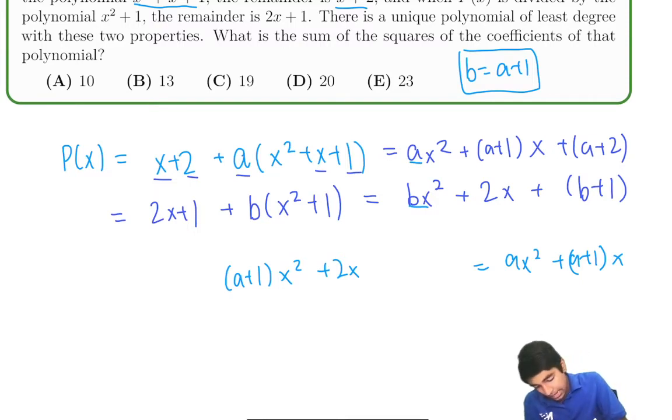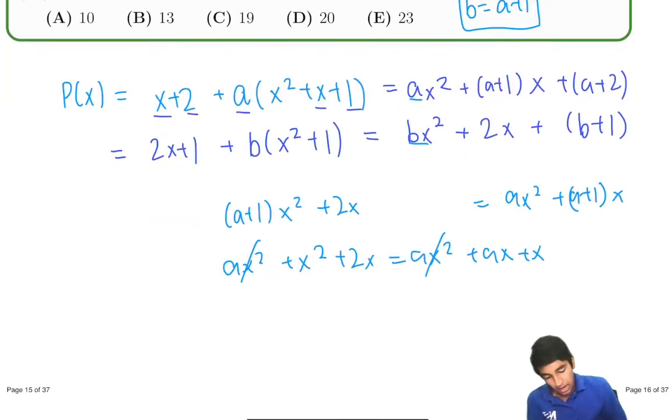And then we have ax squared plus x squared plus 2x equals ax squared plus ax plus x. We cancel out a squared. And now we're left with x squared equals a plus 1 x minus 2x. So a minus 1 x. We cancel out x from both sides. x is a minus 1 or a is x plus 1.